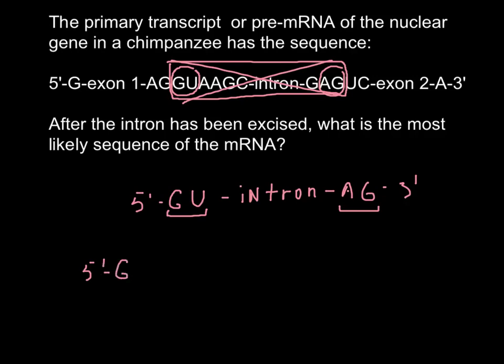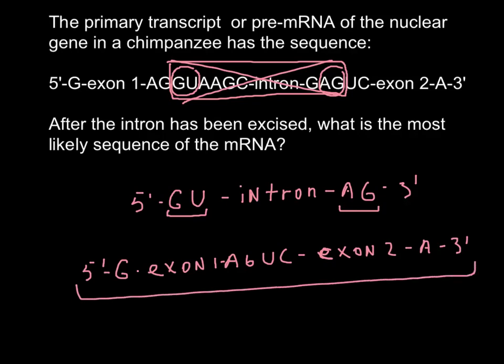and G exon 1 AGUC exon 2 A 3' end. So this would be the mature mRNA without intron.